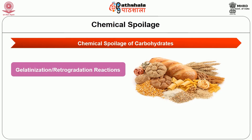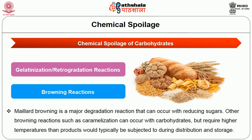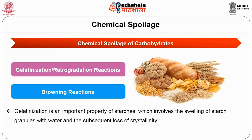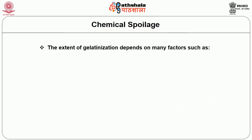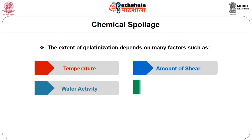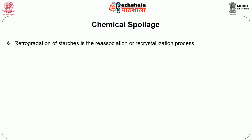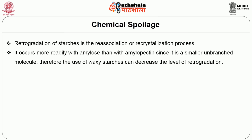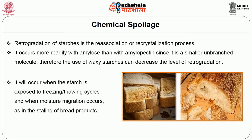Chemical spoilage of carbohydrates can include gelatinization or retrogradation reactions and browning reactions. Maillard browning is a major degradation reaction that can occur with reducing sugars. Other browning reactions such as caramelization can occur with carbohydrates but require higher temperatures than products would typically be subjected to during distribution and storage. Gelatinization is an important property of starches, which involves the swelling of starch granules with water and the subsequent loss of crystallinity. The extent of gelatinization depends on many factors such as temperature, amount of shear, water activity, and the presence of other components such as sugars and lipids. Retrogradation of starches is the re-association or re-crystallization process. Retrogradation occurs more readily with amylose than with amylopectin since it is a smaller and less-branched molecule. Therefore, the use of waxy starches can decrease the level of retrogradation. Often retrogradation will occur when the starch is exposed to freezing or thawing cycles and when moisture migration occurs, as in the staling of bread products.